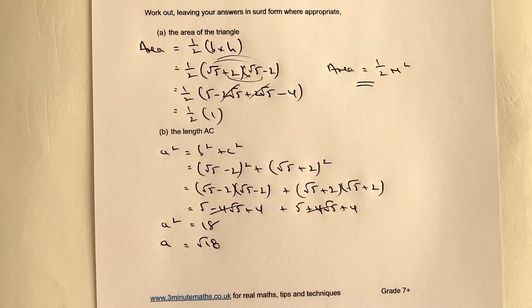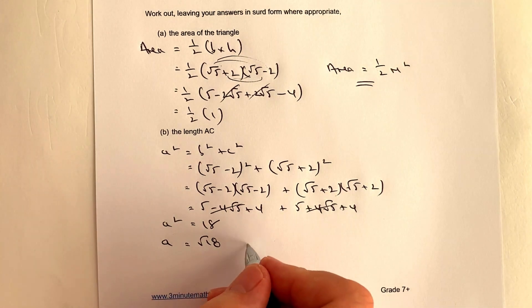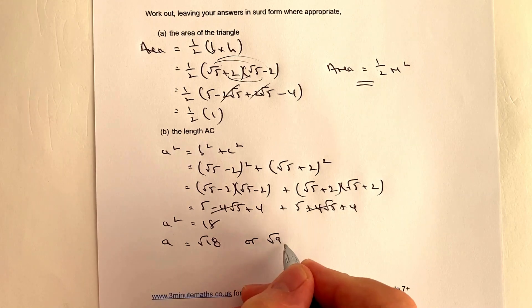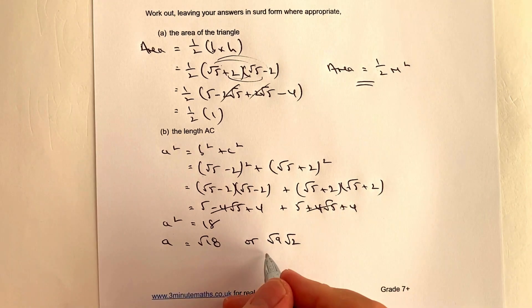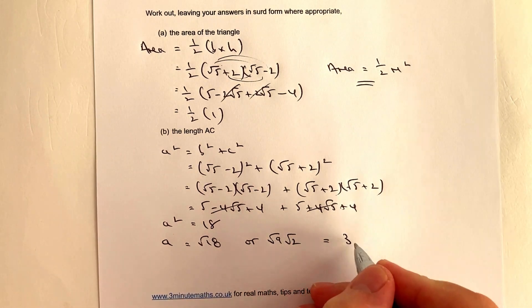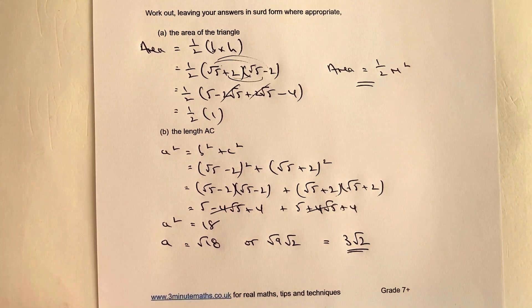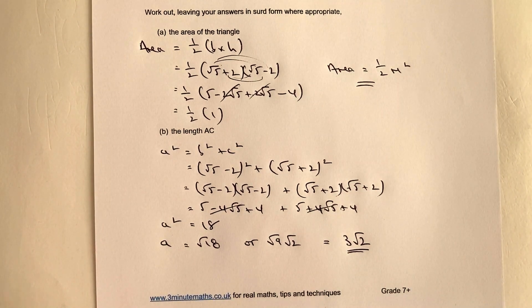That's the answer, but we can simplify it. √18 is the same as √9 times √2, which equals 3√2. So the length of AC is 3√2 meters.